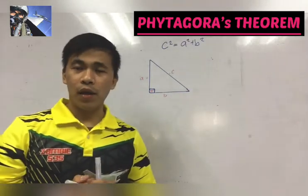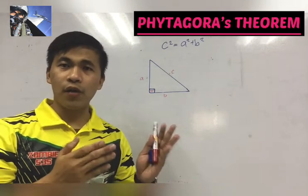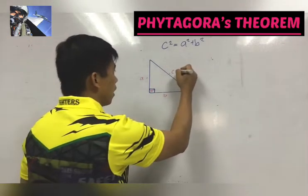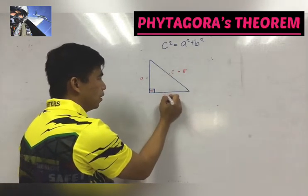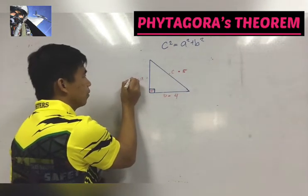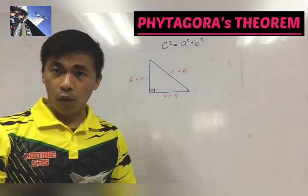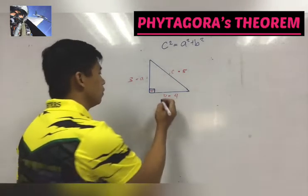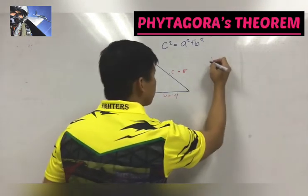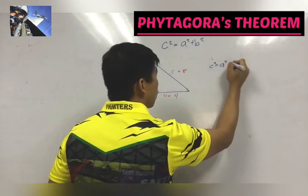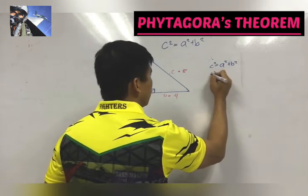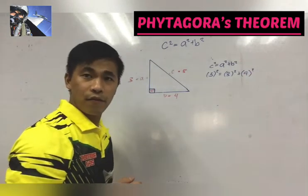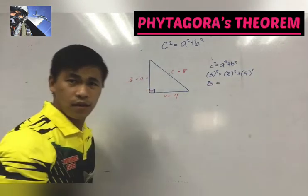So let's take for example, we'll solve for a certain problem. Let us prove if a certain triangle is a right triangle. A triangle that is made of sides: C as 5, B as 4, and A as 3. So utilizing the equation C² = A² + B², let's find out if this one is really a right triangle. So by substitution, C² = A² + B². So 5² = 3² + 4². So the square of 5 which is 25, is it the same with 3² + 4²?